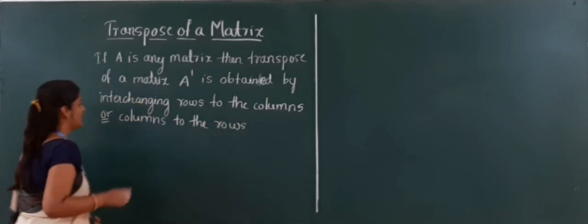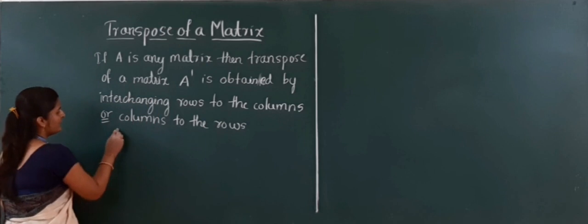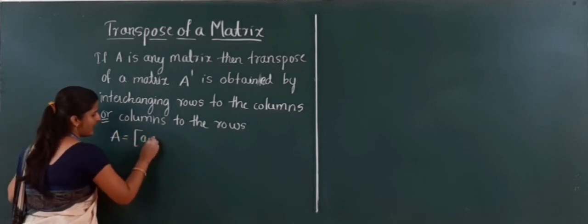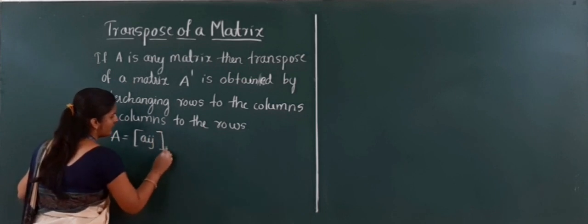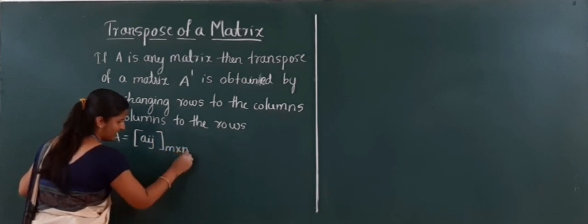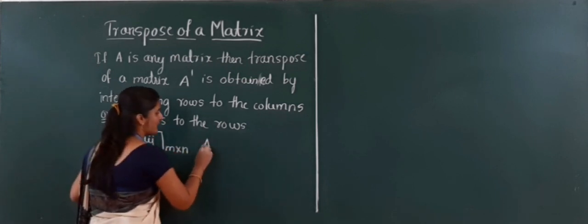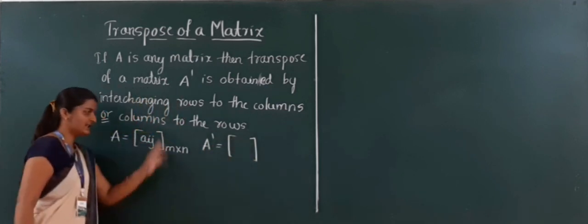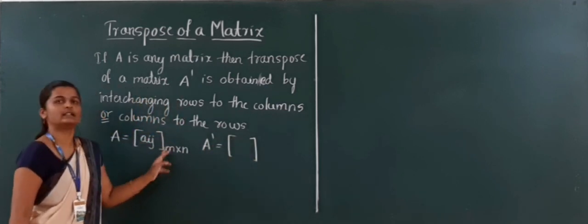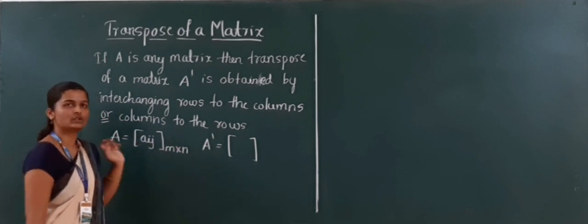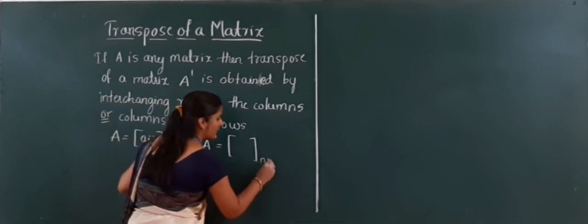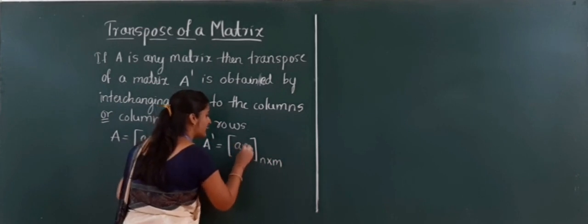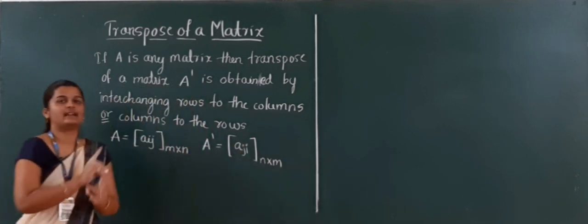In formal notation, if A is a matrix A[i][j] of order M by N, then the transpose of matrix A dash is obtained by changing the rows into columns and columns into rows. The order will be N by M, and the elements will be A[j][i] — the indices are interchanged.